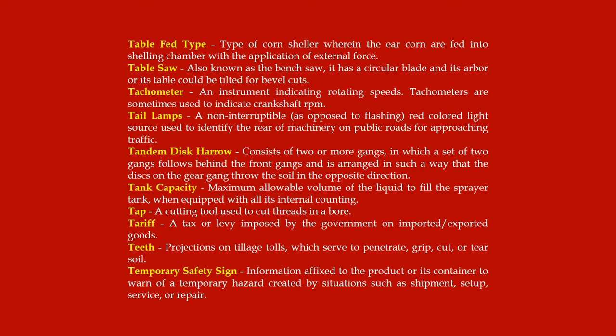Tail lamps: a non-interruptible, as opposed to flashing, red-colored light source used to identify the rear of machinery on public roads for approaching traffic. Tandem disc harrow: consists of two or more gangs in which a set of two gangs follows behind the front gangs and is arranged so that the discs on the rear gang throw the soil in the opposite direction. Tank capacity: maximum allowable volume of liquid to fill the sprayer tank when equipped with all its internal fittings.